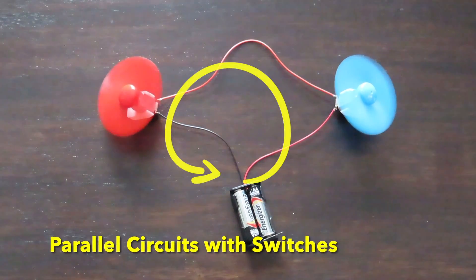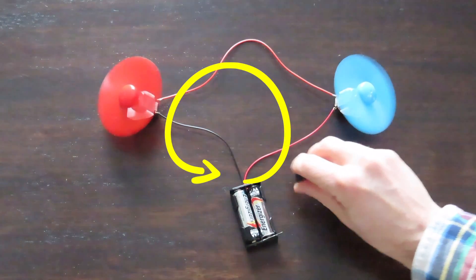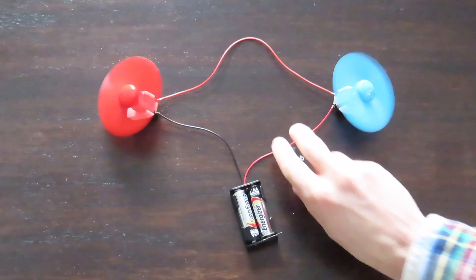Let's first look at a simple series circuit. It is a series circuit because the wires between the batteries and motors form a single path.